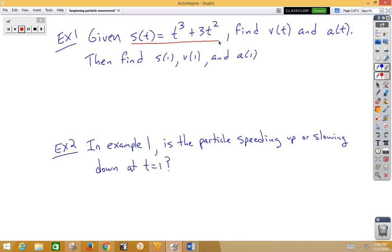So to find v(t), we would take the derivative of that, so s prime of t, which would be v(t), would be 3t² + 6t.